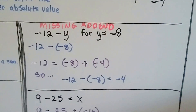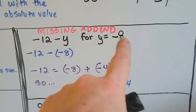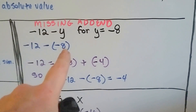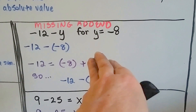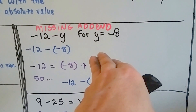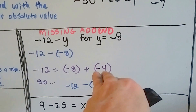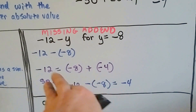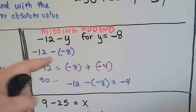Here's the missing addend approach. We've got negative 12 minus y, and y is going to be negative 8. So we rewrite it as negative 12 minus negative 8. That means negative 12 is equal to negative 8 plus something. What does negative 8 need to be added with to get to negative 12? It's got to go deeper into the negatives on the number line, so it's going to be negative 4. We'll get negative 12. So negative 12 minus a negative 8 equals negative 4.